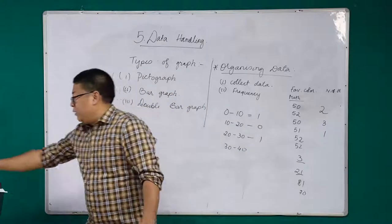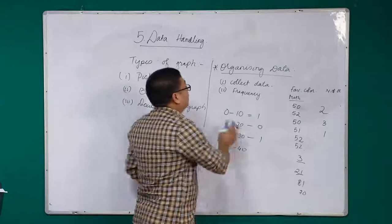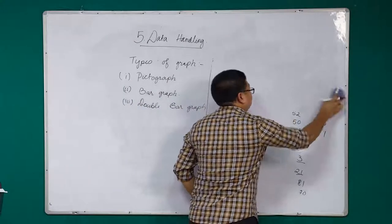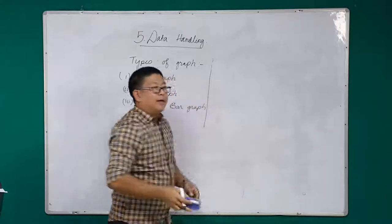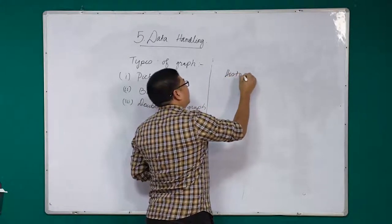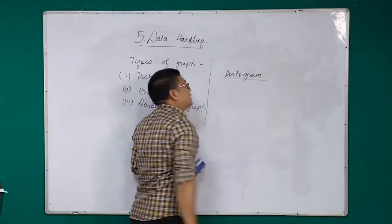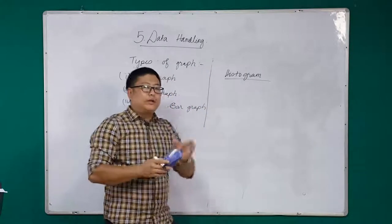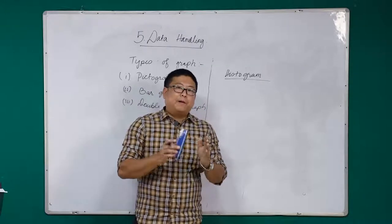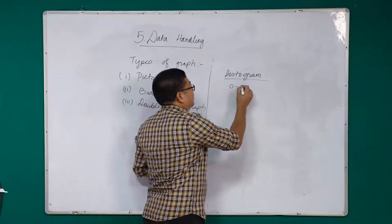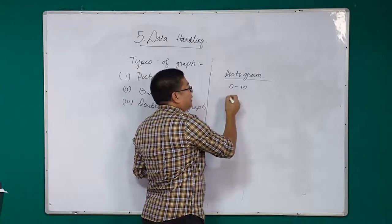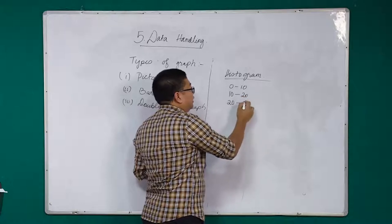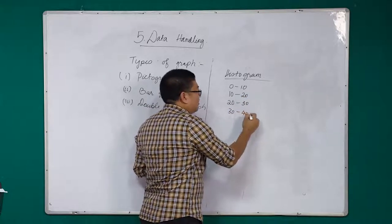After grouping the data, we will be drawing a graph called a histogram. In a histogram, the data is arranged in such a way that there is no gap in between — just like our intervals of 0 to 10, 10 to 20, 20 to 30. After 10, it directly continues at 10 again with no gap. We will come to this in more detail later on.